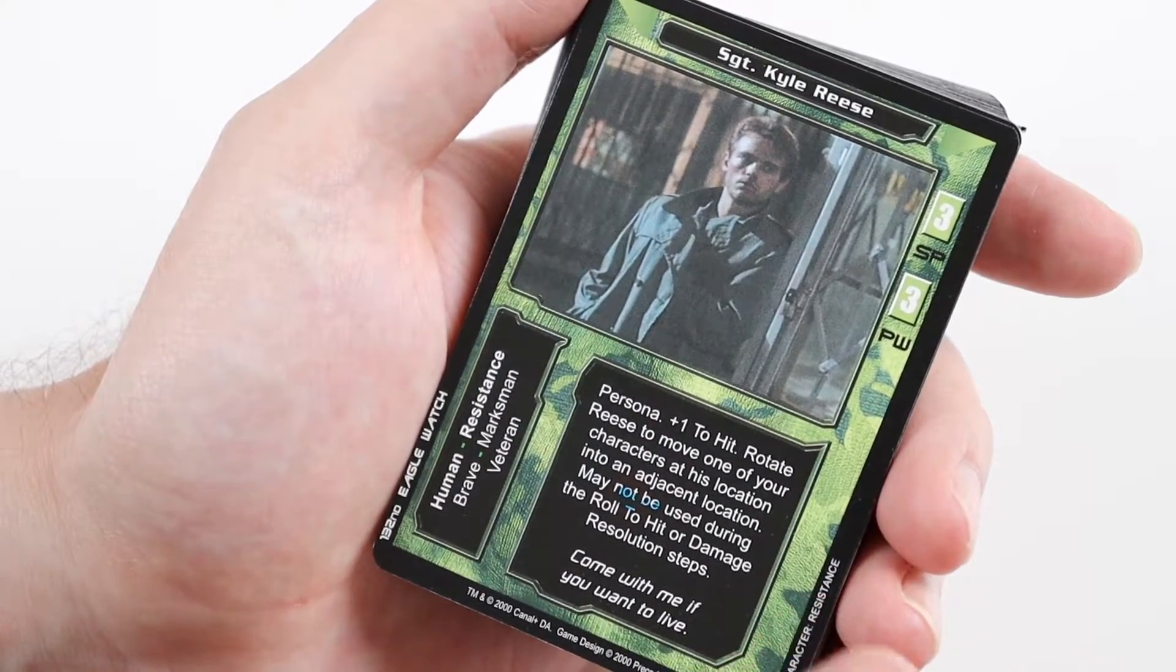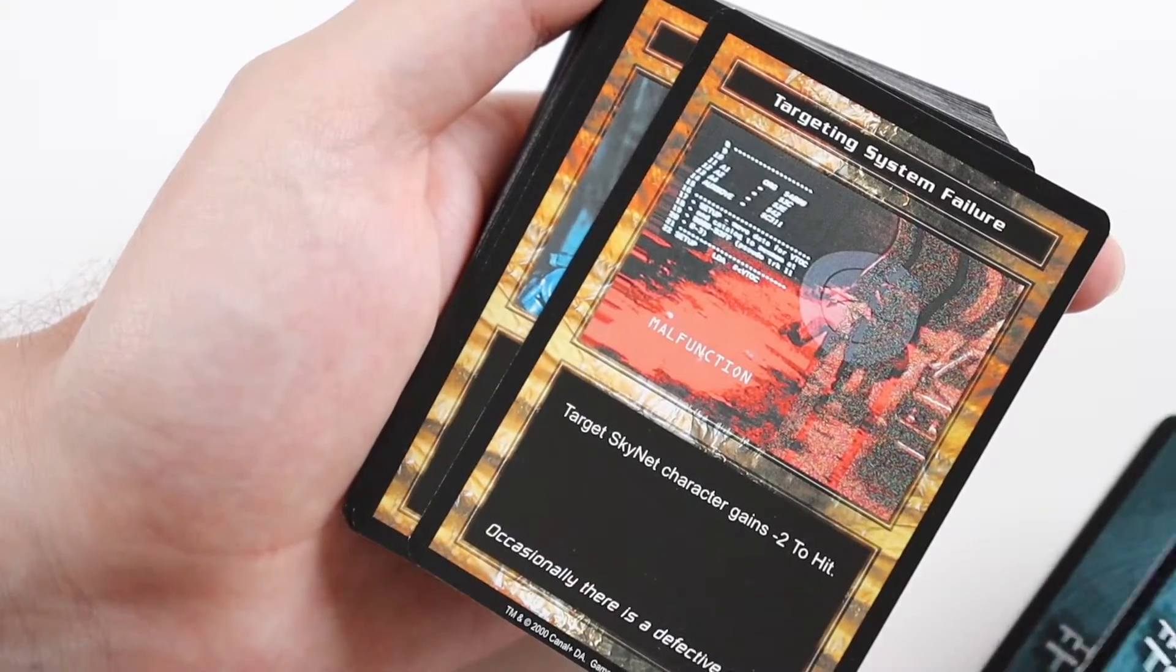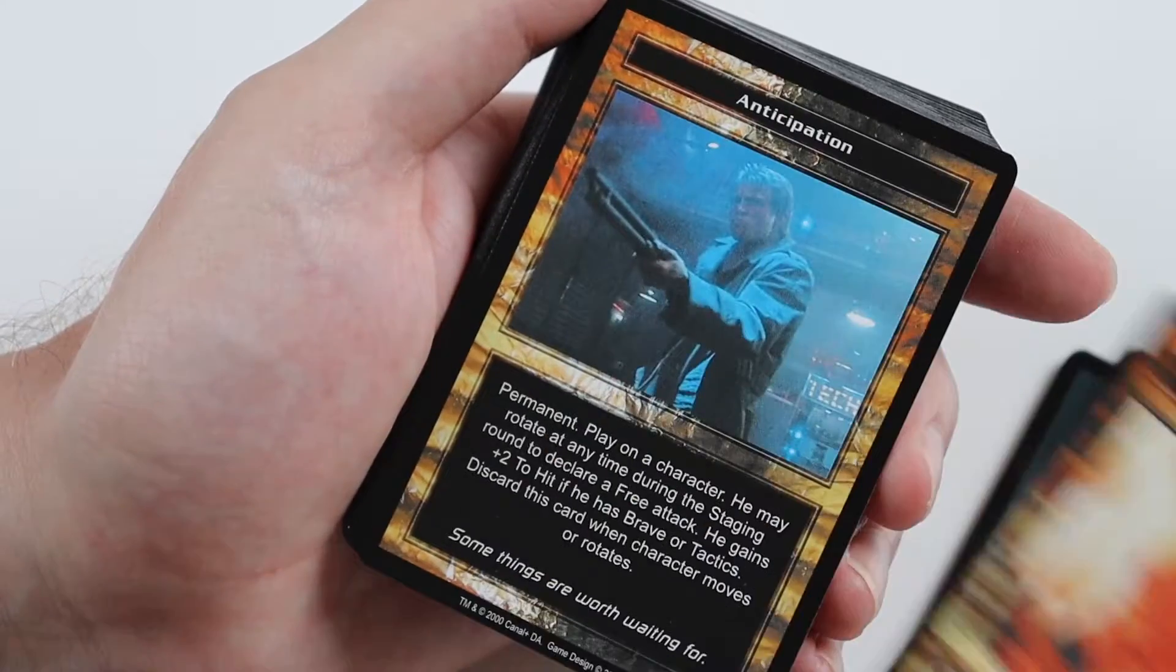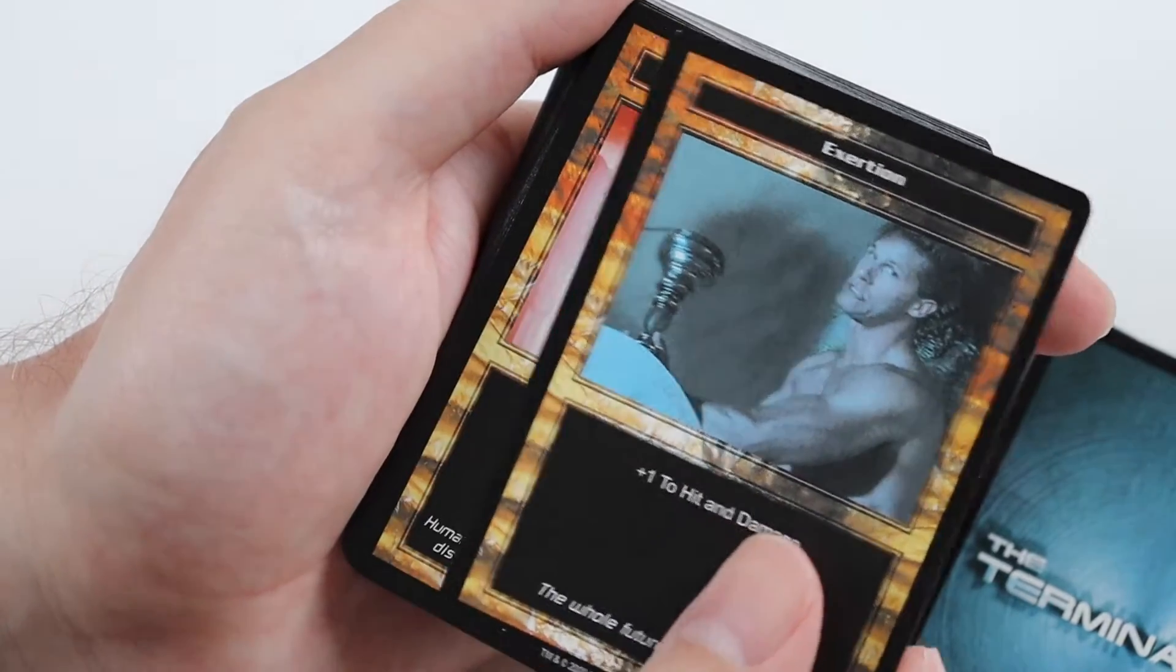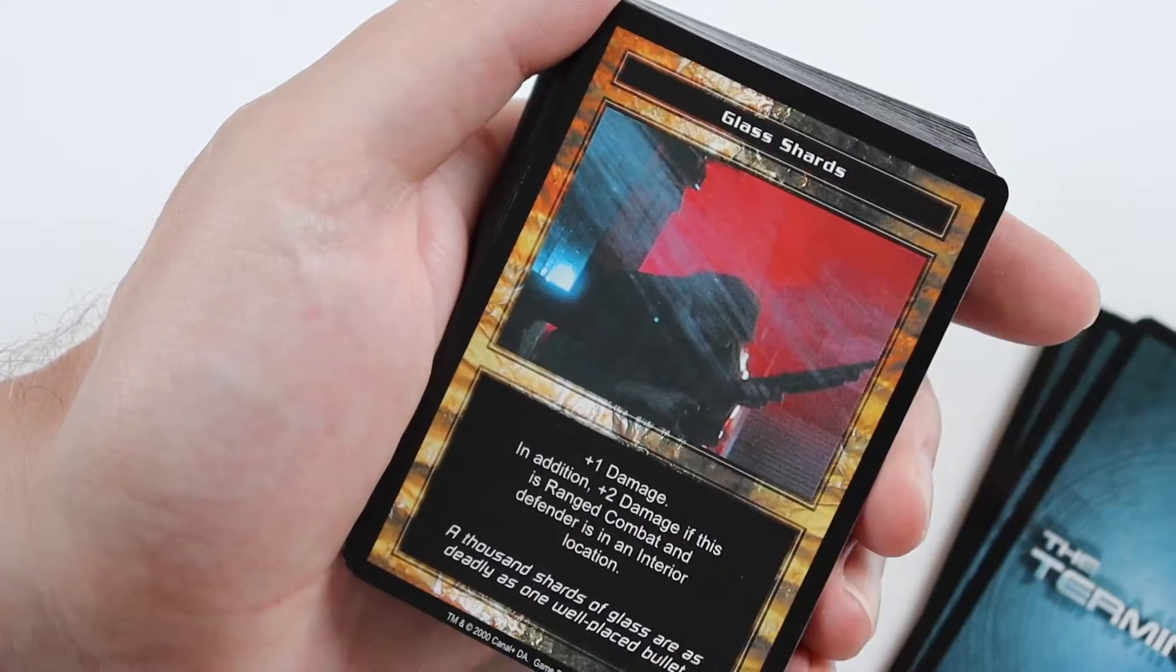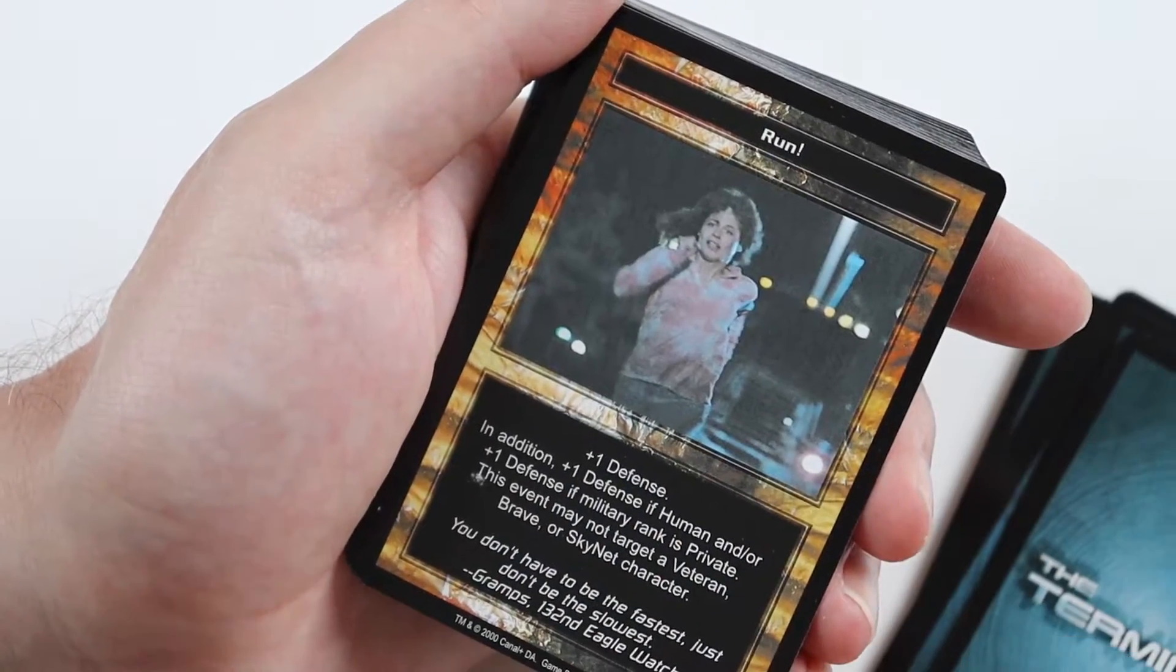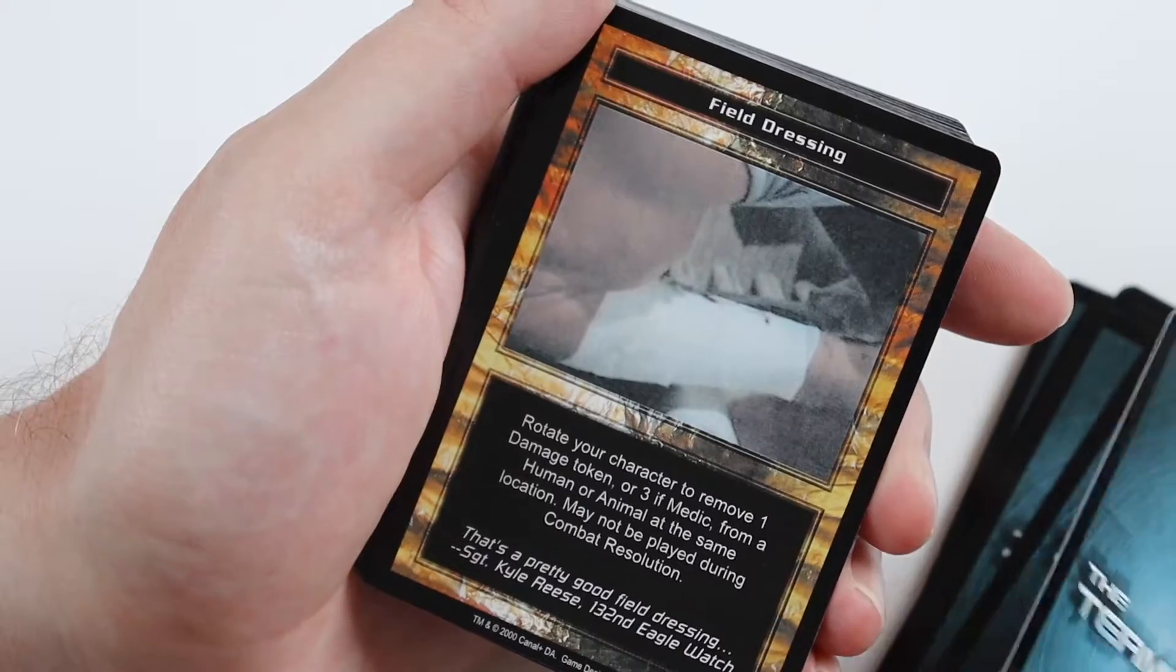So this one is Sergeant Kyle Reese. Move it. Targeting system failure. Distractions. Shattered hope, two of those. Anticipation, two of those. Exertion. Human intuition. Heated fighting. Glass shards. Caught off guard, two of those, three of those. Run. Stay frosty, two of those.